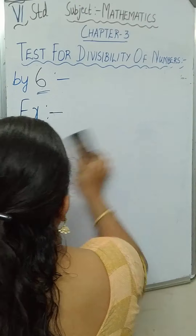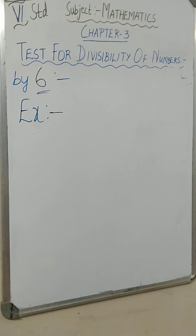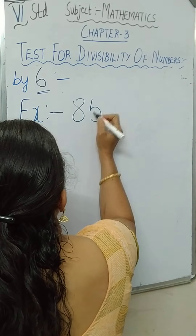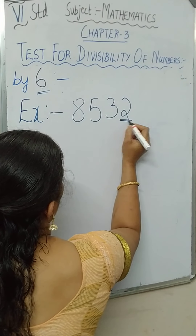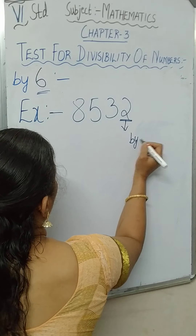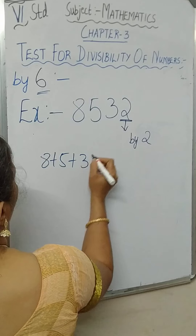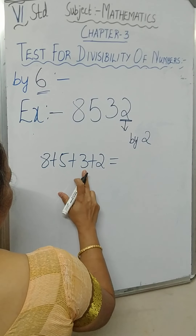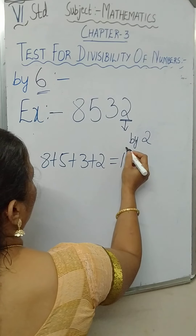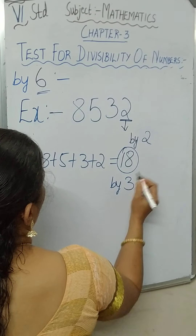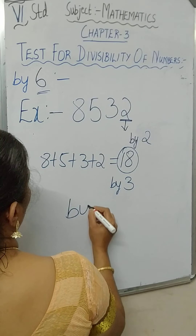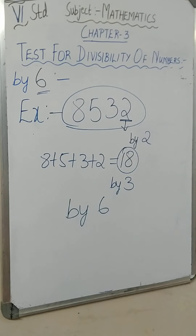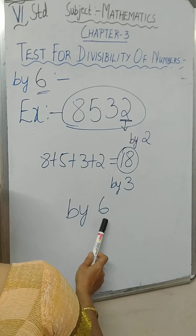We will see another example: 8,532. Let us check whether it is divisible by 2. Yes, it is divisible by 2. Now check for 3: 8 plus 5 plus 3 plus 2. That gives 8 plus 5 is 13, 13 plus 3 is 16, 16 plus 2 is 18. Is 18 divisible by 3? Yes, because 18 is a multiple of 3. Both conditions are satisfied — it is divisible by 2 as well as 3, so 8,532 is divisible by 6.